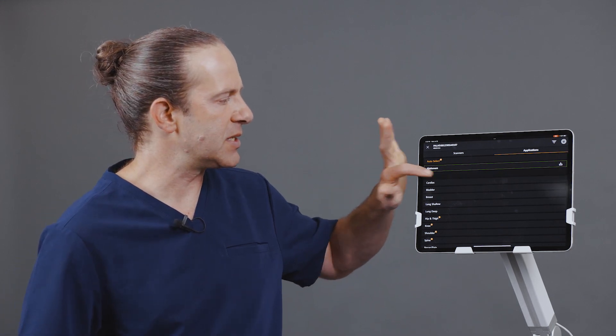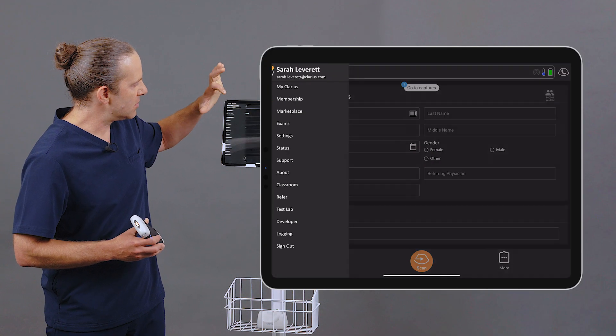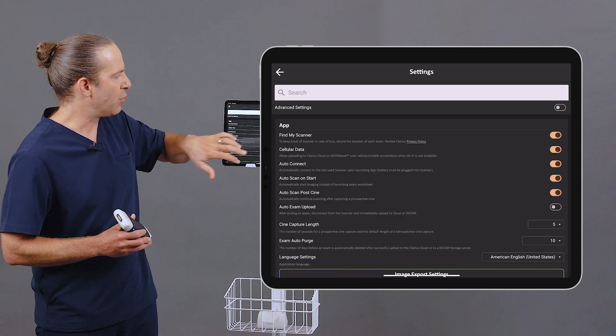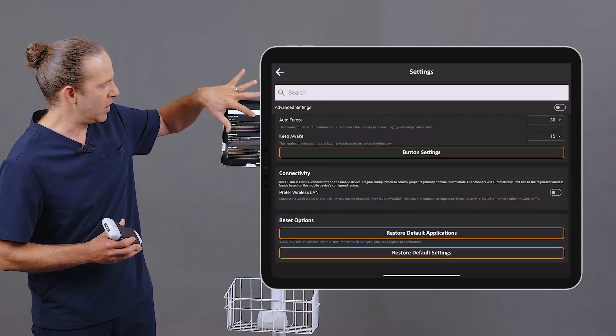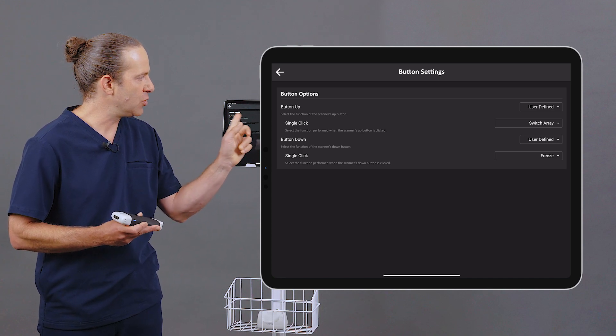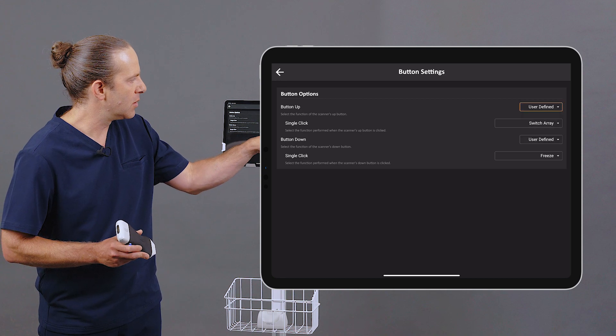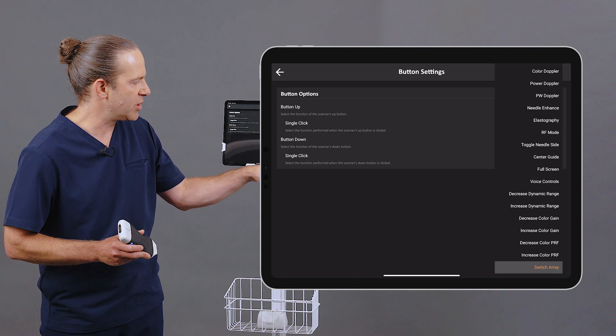The other way is to go in through the settings and preset, which just needs to be done one time. In button settings, I make sure that I'm going to choose Button Up as user defined, and I'm going to correlate it with Switch Array.